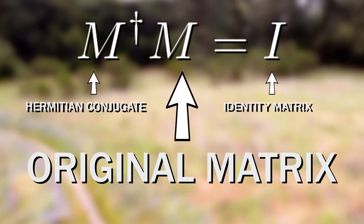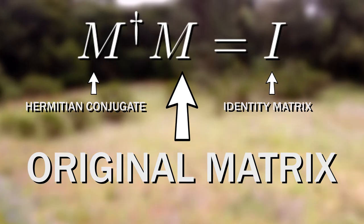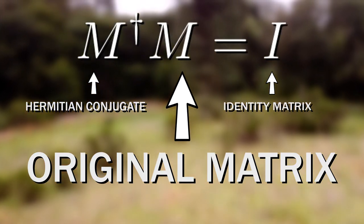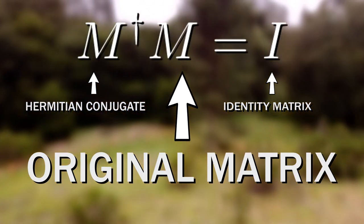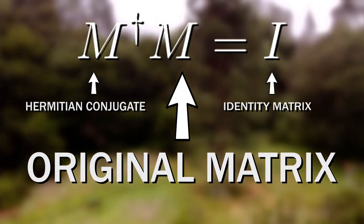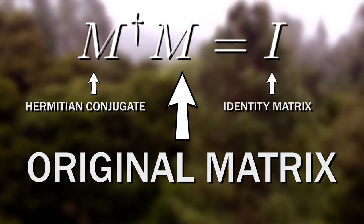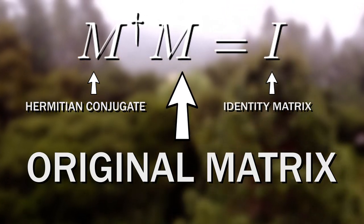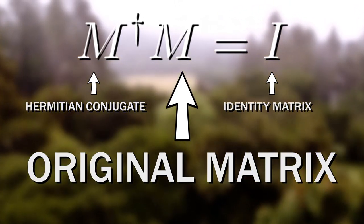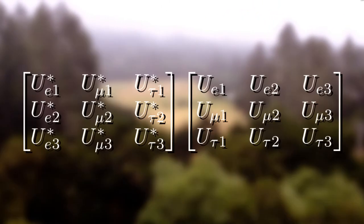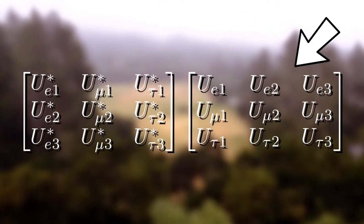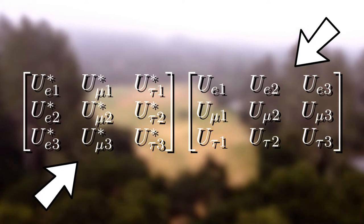In the case of the PMNS matrix it looks something like this — here's the original, the Hermitian conjugate, and we see an answer that's reminiscent of the identity matrix.